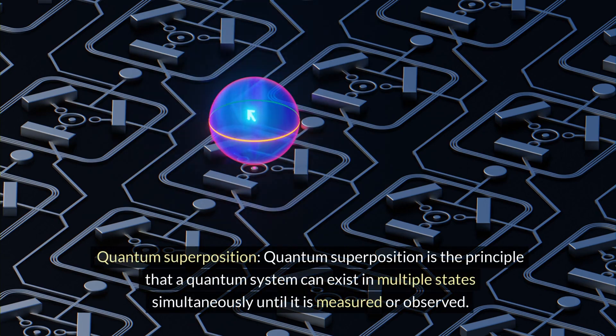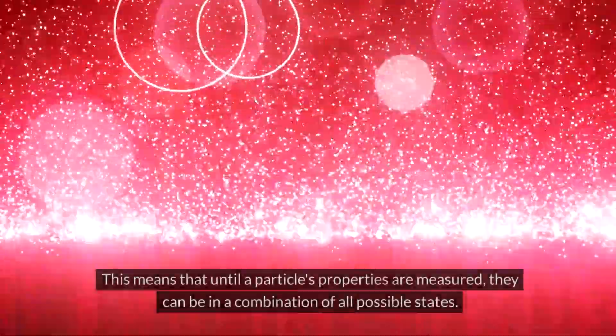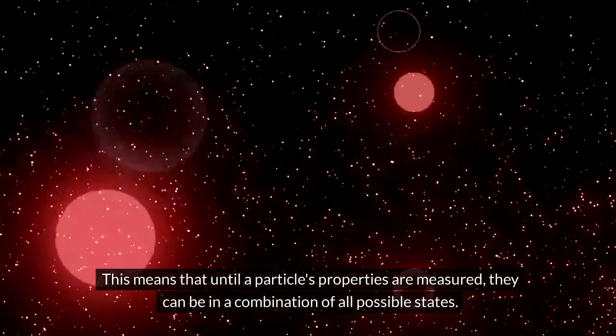Quantum superposition. Quantum superposition is the principle that a quantum system can exist in multiple states simultaneously until it is measured or observed. This means that until a particle's properties are measured, they can be in a combination of all possible states.